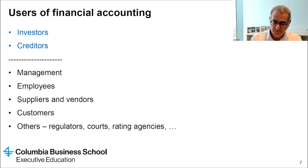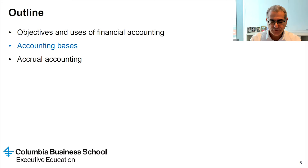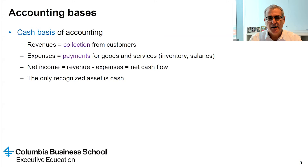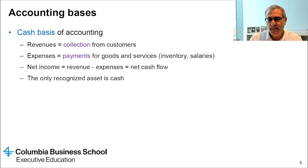So how does financial accounting work? We have two bases of accounting — two alternative ways of measuring performance: cash basis and accrual basis. The cash basis of accounting is simple. Revenue is simply the amount collected from customers during the period. Expenses are payments during the period — payments for goods and services. And net income under the cash basis is simply the difference between cash collections and cash payments — net cash flow during the period.